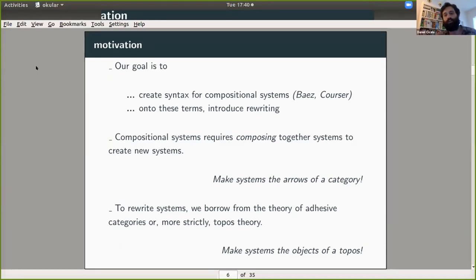Compositional systems require composing systems together. So if you're a category theorist worth your salt, you'll automatically think of arrows of a category. So in one sense, we want to think of systems as the arrows of some category. But also what I want to do is to introduce this rewriting formalism. And to do that, we're going to borrow from the theory of adhesive categories, which is kind of the largest, most general axiomatization of the theory of rewriting.